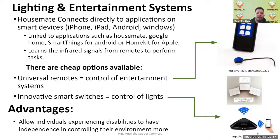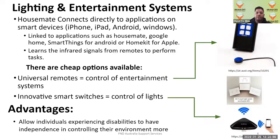These systems allow individuals experiencing FND and other disabilities to have independence in controlling their home environment. If you're alone at home and experiencing FND with tremors or cognitive difficulties, these systems help. With tremors, a single-touch system means you don't have to worry about pressing multiple buttons. With cognition issues, you can put stickers on the Housemate Light to remind you what each button does, so you don't have to remember the tasks.